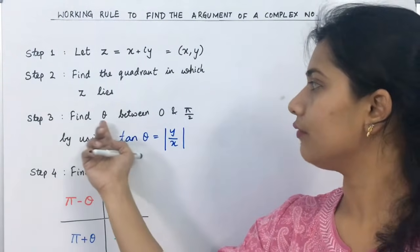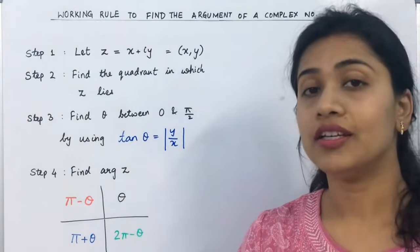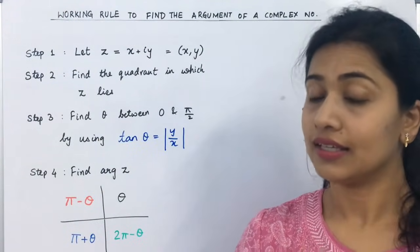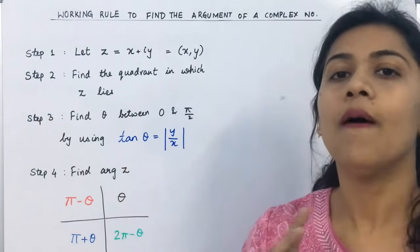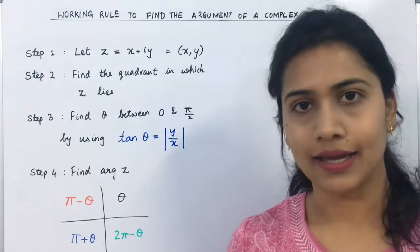This time we will find the value for theta, between 0 and 90. What kind of equation? By using this equation tan theta is equal to modulus of y upon x.